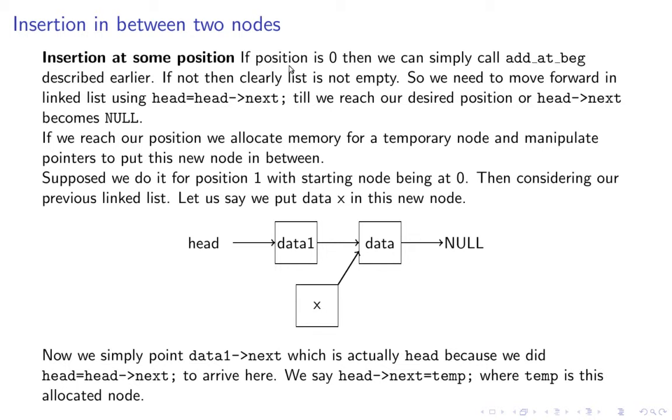If the position is zero, we can simply call add at beginning as described earlier. The list may be empty or not empty. But if position is not zero, then the list is clearly not empty. That is, if position is greater than zero, the list is clearly not empty.